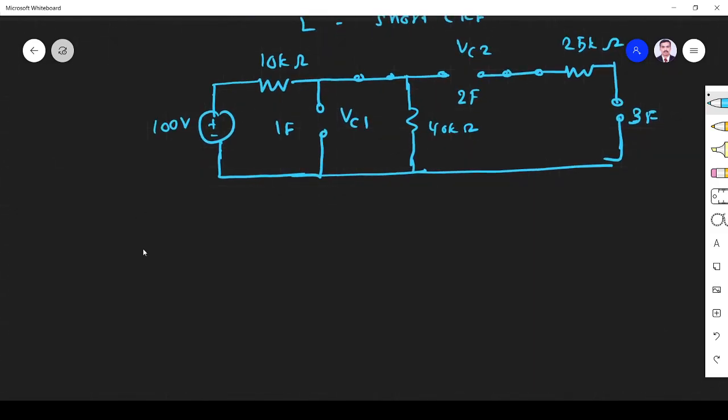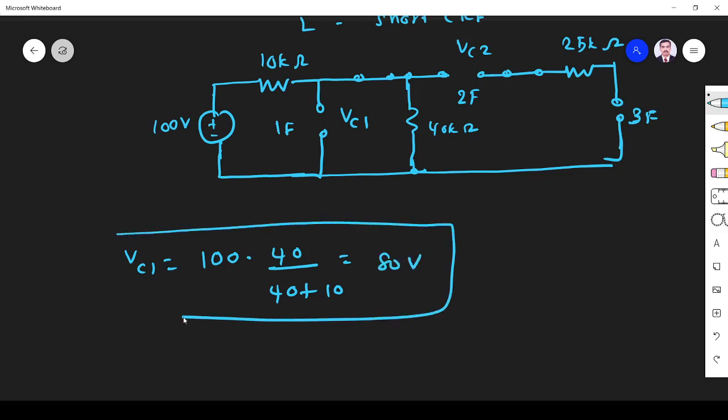So now I have to find what is VC1. VC1 is the voltage across capacitor C1, if I want to find VC1, VC1 is nothing but voltage across 40 kilo ohm. I apply voltage divider rule, so it is 10k, it is 40k. I want to find voltage across 40k, so voltage divider will apply: total voltage into voltage across particular resistor divided by total 40 plus 10 total resistance. So it is 40 by 50, it is 2 into 40, 80 volt. So VC1 I found 80 volt.